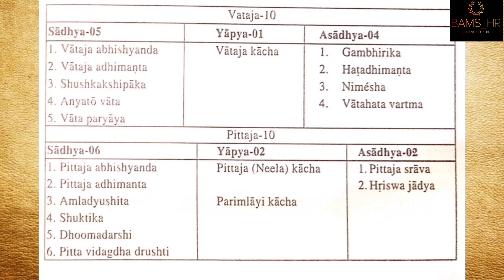Pittaja netrarugas are 10, of which sadhya are 6: pittaja vishandhya, pittaja adhimantha, amladhyushita, shushka, shuktika, dhumadarshi, and pitavitakda drishti. Yapya 2: pittaja kacha and auronasa neela. Asadhya 2: parimleya kacha — wait, sadhya 2 are pittaja suraha and rasvajatya.